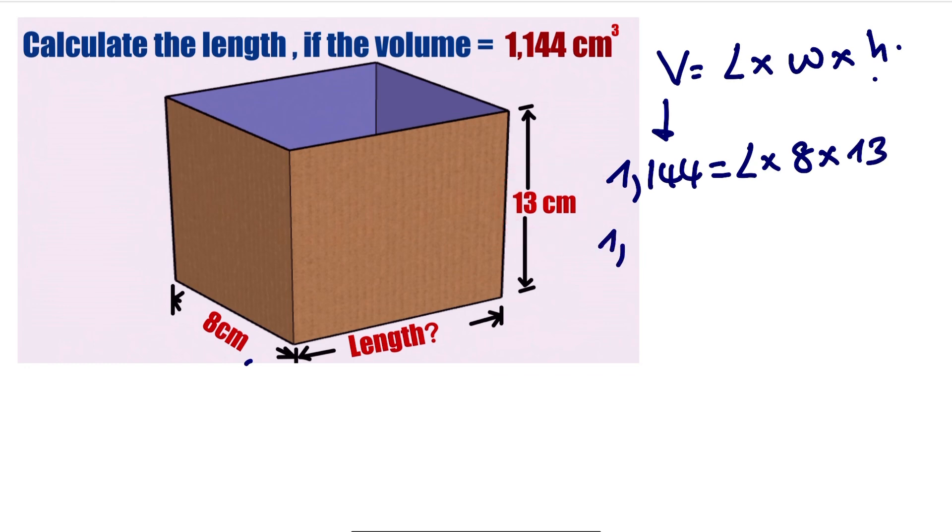So we are going to have 1,144 equals, if we multiply 8 times 13 will give us 104, so we have 104L. So we have an equation. To get the value of L, we are going to have 1,144 divided by 104.